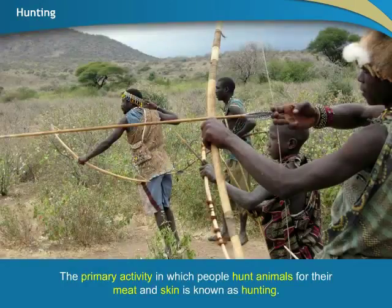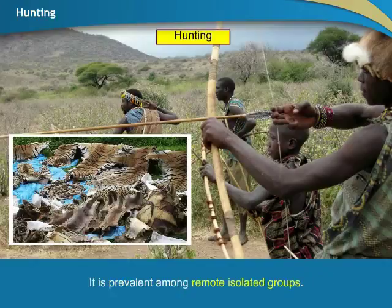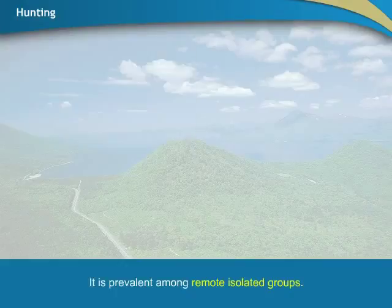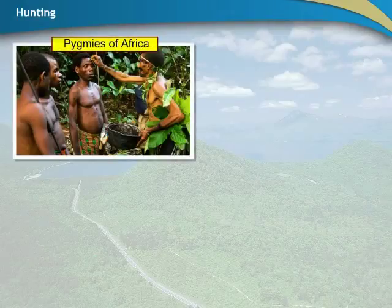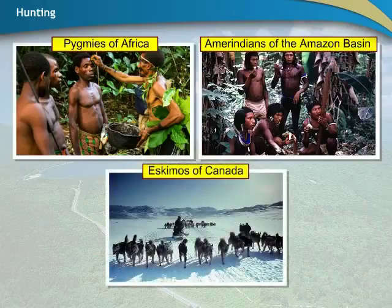The primary activity in which people hunt animals for their meat and skin is known as hunting. It is prevalent among remote, isolated groups — for example, the Pygmies of Africa, the Amerindians of the Amazon Basin, and the Eskimos of Canada.